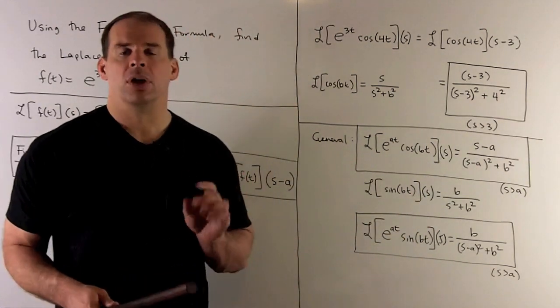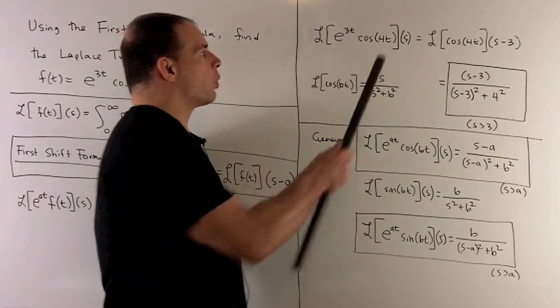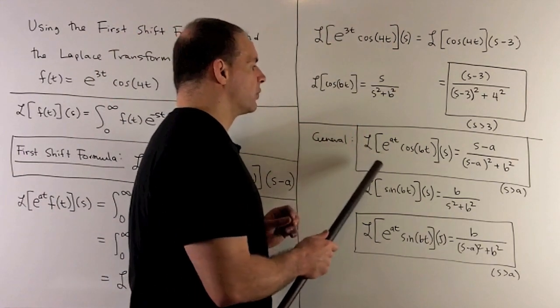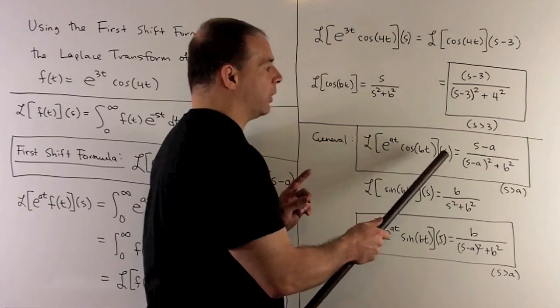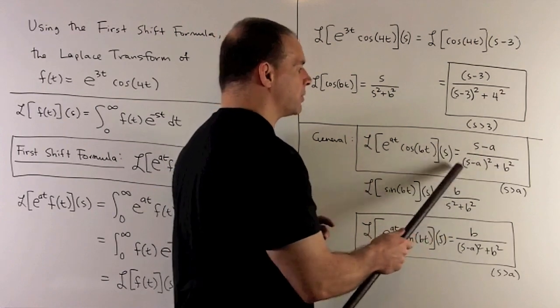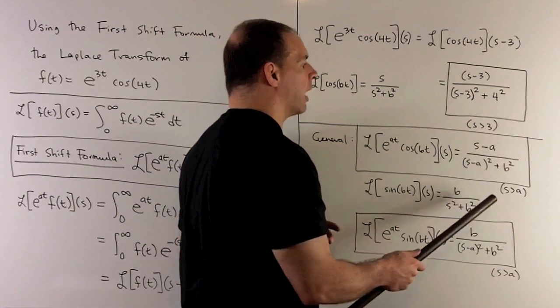Nothing special about the 4 or the 3 here. For the general formula, Laplace transform of e^(at)cos(bt) evaluated at s is just (s-a) over (s-a)² plus b², with domain s greater than a.